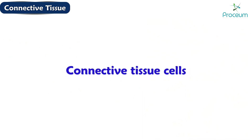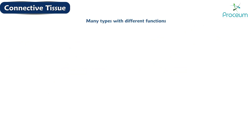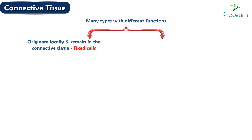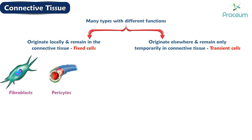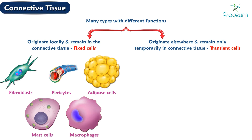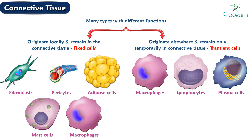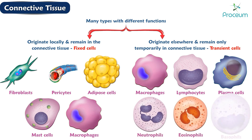Connective tissue cells include many types with different functions. Some originate locally and remain in the connective tissue — fixed cells — whereas others originate elsewhere and remain only temporarily — transient cells. Fixed connective tissue cells include fibroblasts, pericytes, adipose cells, mast cells, and fixed macrophages. Transient connective tissue cells include certain macrophages, lymphocytes, plasma cells, neutrophils, eosinophils, and basophils.